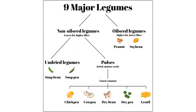So keep listening, because this is how you're going to impress all your friends at dinner. Looking at the oilseed legumes, peanut and soybean are the two main examples. Another reason we call them oilseed legumes is that peanuts and soybeans are often used for oil — we extract oil and use that in cooking or processed food.